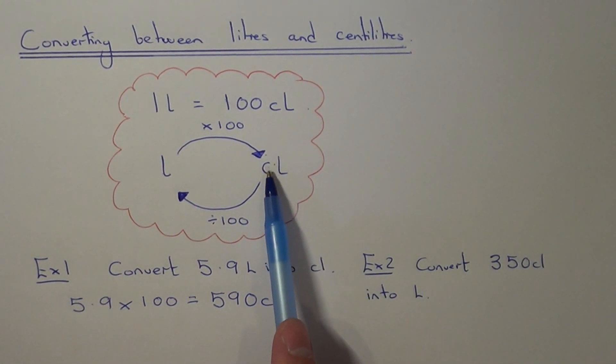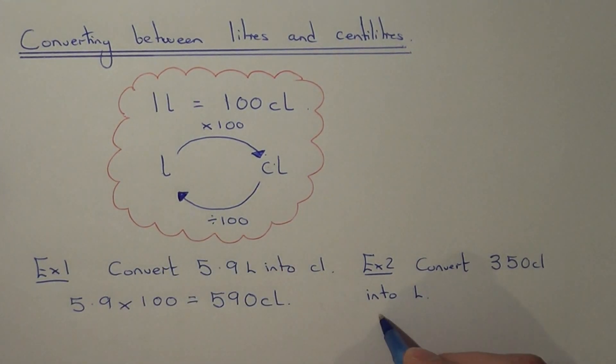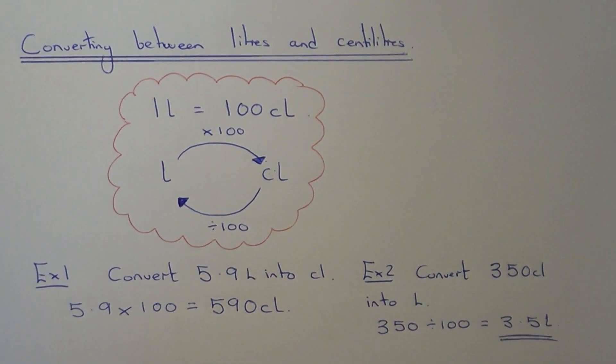If we look at our diagram here, centiliters into liters we need to divide by 100. So we have to work out 350 divided by 100, and this will give us an answer of 3.5 liters. Thank you.